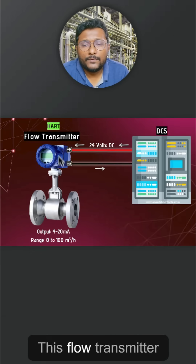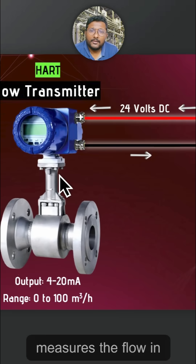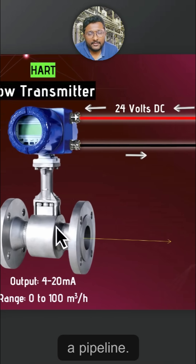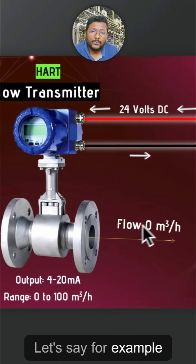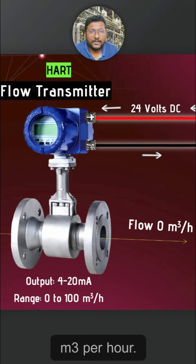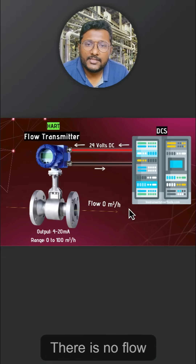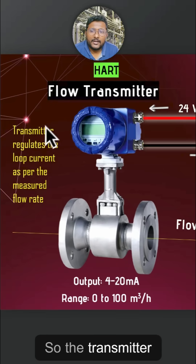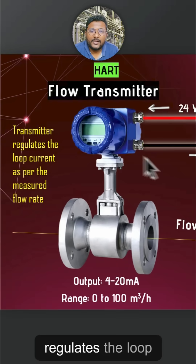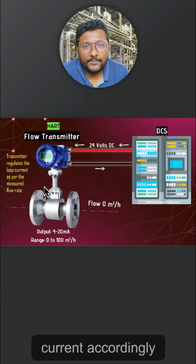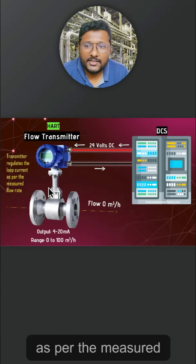This flow transmitter measures the flow in a pipeline. For example, if the flow is 0 m³ per hour — meaning there is no flow at all — the transmitter regulates the loop current accordingly as per the measured flow rate.